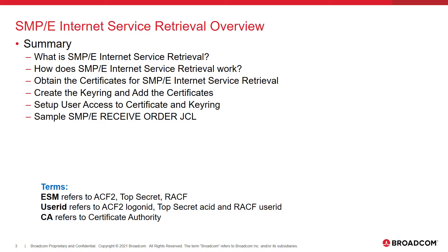In this presentation, we will go over what CA SMPE Internet Service Retrieval is, in addition to a high-level overview of how it works. We will show you where to obtain the digital certificates required for the configuration, and give sample commands for creating a keyring and adding the certificates to it. There will also be sample commands for granting user access to the certificates and keyring. Lastly, we will go over the fields in the sample SMPE Receive Order JCL and explain how to point to the keyring we created. Some terms we will be using include ESM, which refers to ACF2, Top Secret, and RACF. User ID, which refers to an ACF2 Logon ID, Top Secret ACID, and RACF User ID. And CA, which refers to a Certificate Authority. All commands and links in the presentation will be included in a text file available for download.